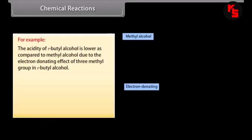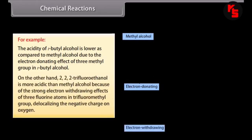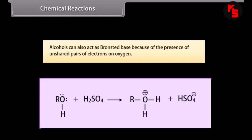For example, the acidity of tertiary alcohol is lower compared to methyl alcohol due to the electron-donating effect of the three methyl groups. On the other hand, 2,2,2-trifluoroethanol is more acidic than methyl alcohol because of the strong electron-withdrawing effect of three fluorine atoms in the trifluoromethyl group, which delocalizes the negative charge on oxygen. Alcohols can also act as Brønsted bases because of the unshared pairs of electrons on oxygen.